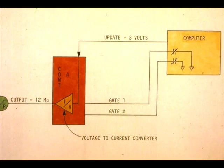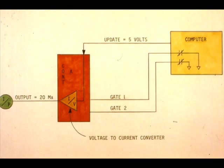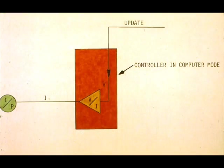If the update line had been 3 volts or 50%, the controller would have produced 12 milliamps of output. Once again, when the controller is in computer mode, it becomes nothing more than a signal conditioner. It converts the computer output to a current signal.